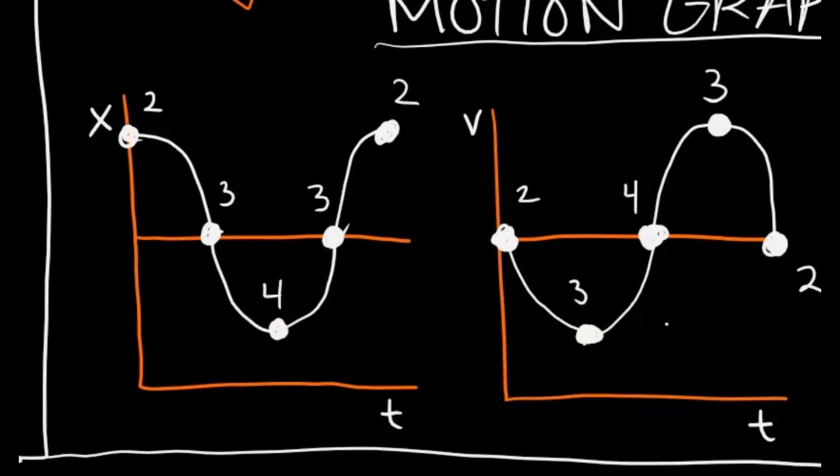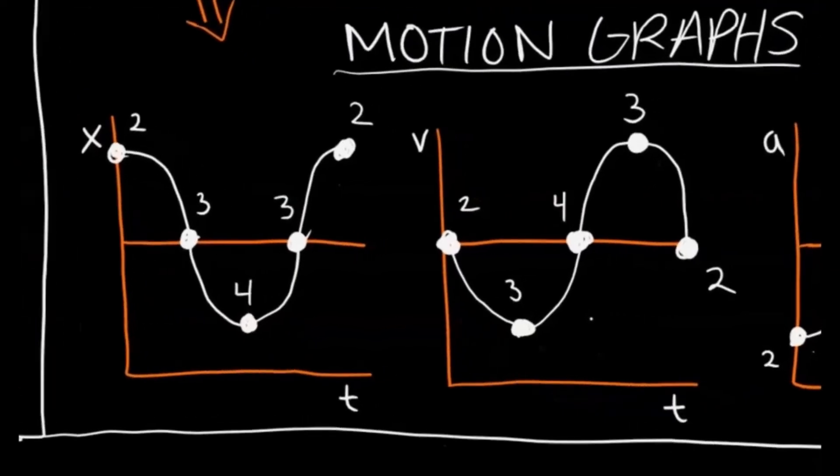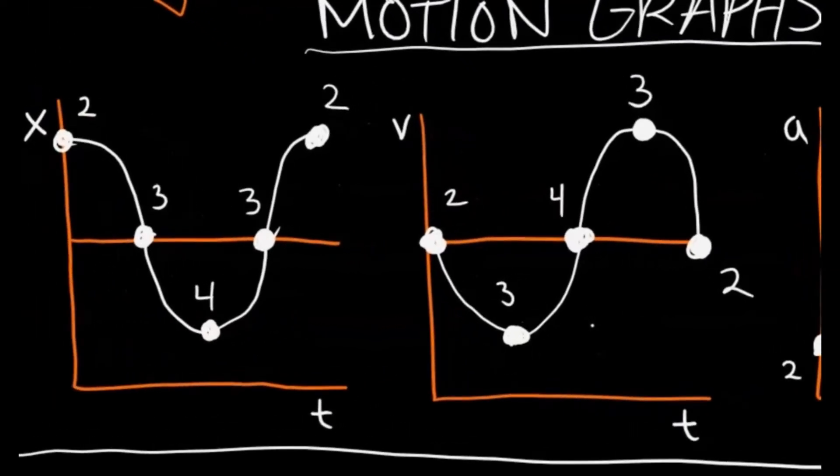Now for velocity, you can see a very similar trend. So for the maximum position at 2, you're going to have zero velocity because acceleration is max, the force is max. But when it reaches the equilibrium position at position 3, that is when the velocity is going to be maximum. So you see how the velocity for position 3 is maximum, whereas the other positions, the velocity is zero.